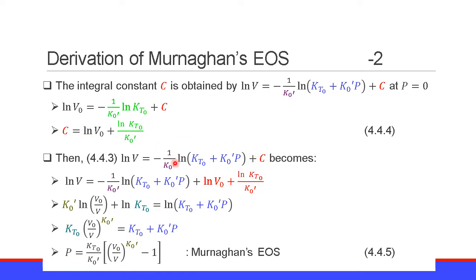Modifying this equation, K0' times the natural logarithm of V0 over V plus the natural logarithm of KT0 equals the natural logarithm of (KT0 plus K0' P). From this, KT0 to the power of K0' times (V0 over V) to the power of K0' equals KT0 plus K0' P. Finally, we have P equal to KT0 over K0' times [(V0/V) to the power of K0' minus 1]. This is Equation 4.4.5 — Murnaghan's Equation of State.